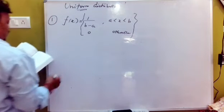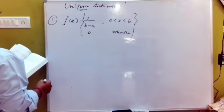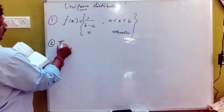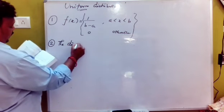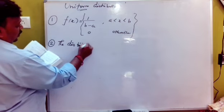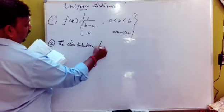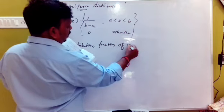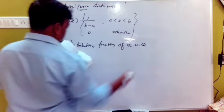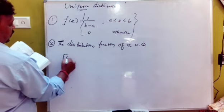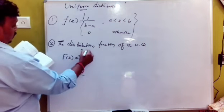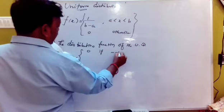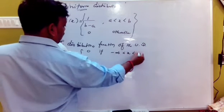Now I will use the distribution function for the uniform distribution. The capital F of x — the CDF. We can use this formula: capital F of x is equal to 0 for x less than a. This is a condition.